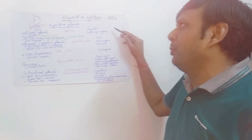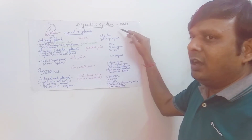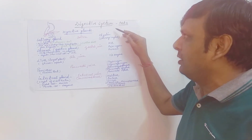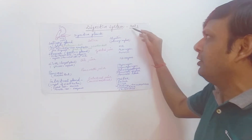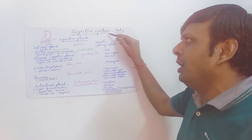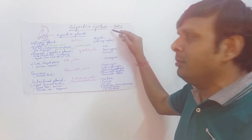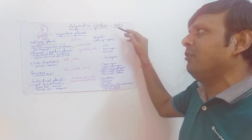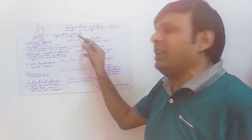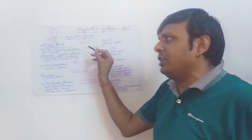Welcome to Popular Academy Biology. In this video we will discuss the first part of the digestive system — specifically the human digestive system. In this part we will discuss about the digestive glands, as a variety of digestive glands are associated with our alimentary canal.